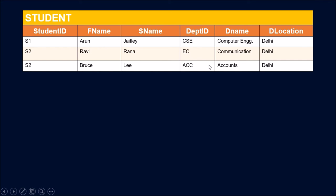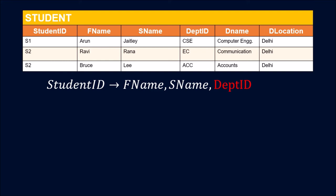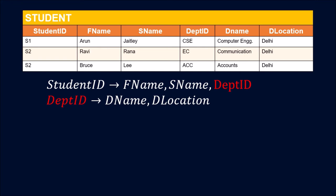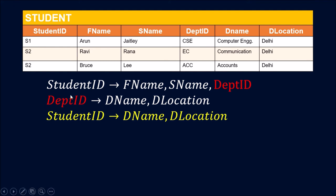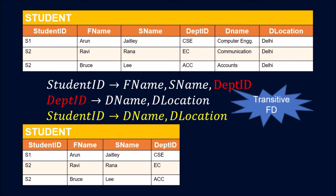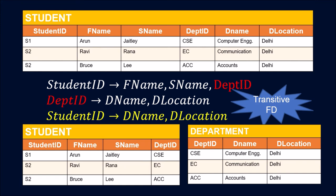In this example, the table has student ID, first name, second name, department ID, department name, and department location, and it is in 2NF. The dependency student ID → department ID is fine, but department ID → department name and department location creates a transitive dependency since department ID is not a candidate key. This violates 3NF.